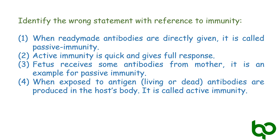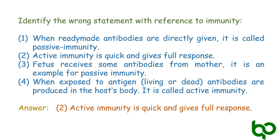The answer is the second option — active immunity is quick and gives full response — because active immunity develops in an organism when exposed to a specific antigen. The organism produces antibodies in response to a foreign antigen; however, the antibody production may not be quick but is long-lasting.